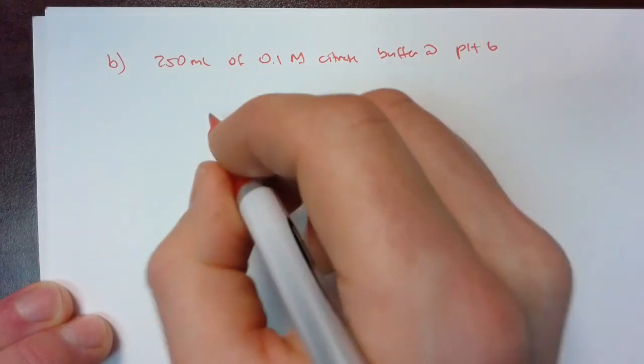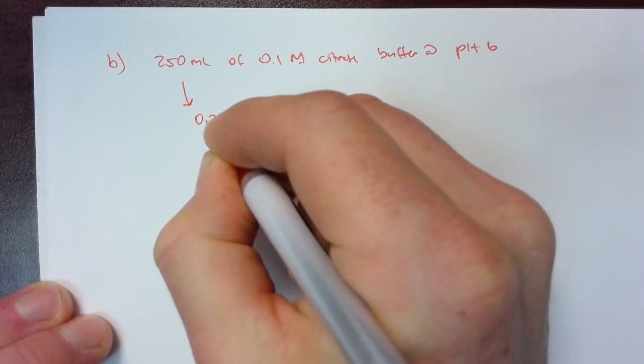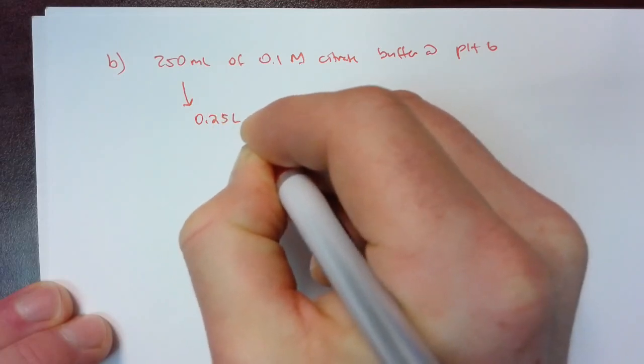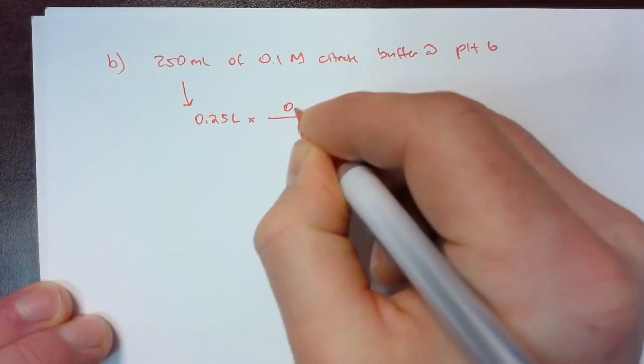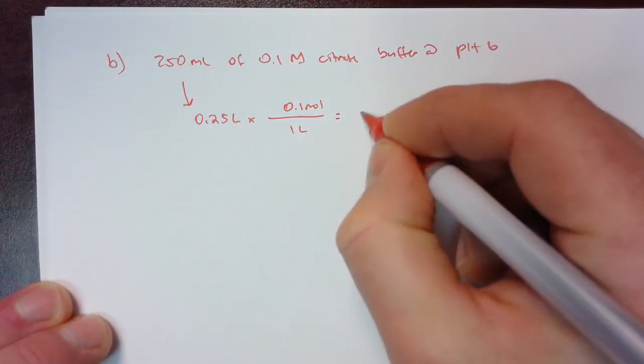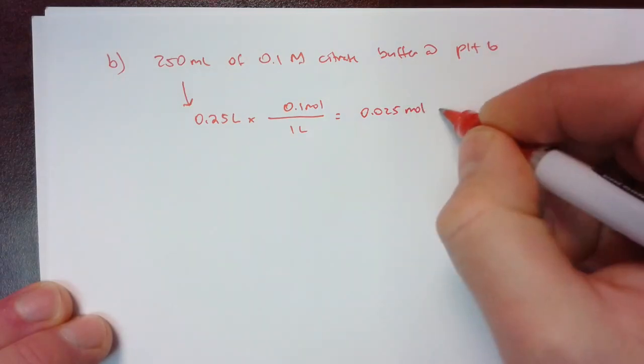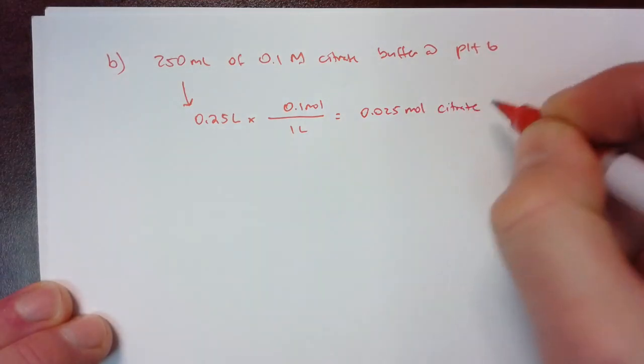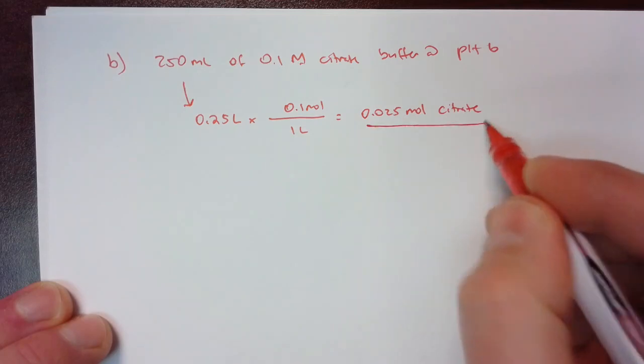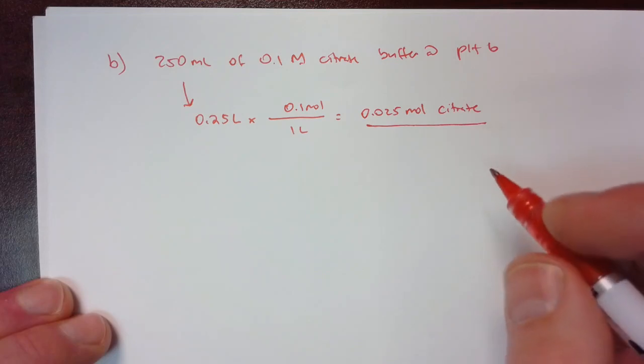But before we do that, let's calculate the number of moles that we have. So this is 0.25 liters. And multiply that times 0.1 moles in one liter. So I get 0.025 moles of citrate. Again, this is the total moles that we have to use. We can't go over this number. We need to use this to figure out what ratio of base to acid to use.